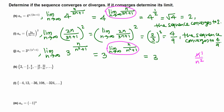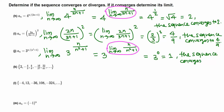So n over n squared simplifies: one copy of n cancels, leaving 1 over n. When n goes to infinity, 1 over n approaches 0, since 1 is fixed and n goes to infinity. So this limit is 0, and 3 raised to 0 is 1. That means this sequence converges to 1.